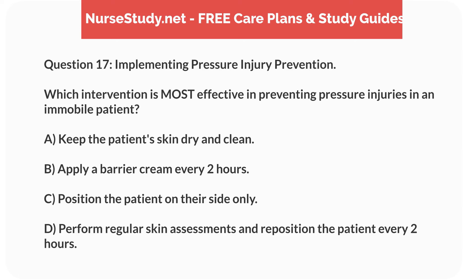Question 17. Implementing Pressure Injury Prevention. Which intervention is most effective in preventing pressure injuries in an immobile patient? A. Keep the patient's skin dry and clean. B. Apply a barrier cream every 2 hours. C. Position the patient on their side only. D. Perform regular skin assessments and reposition the patient every 2 hours.